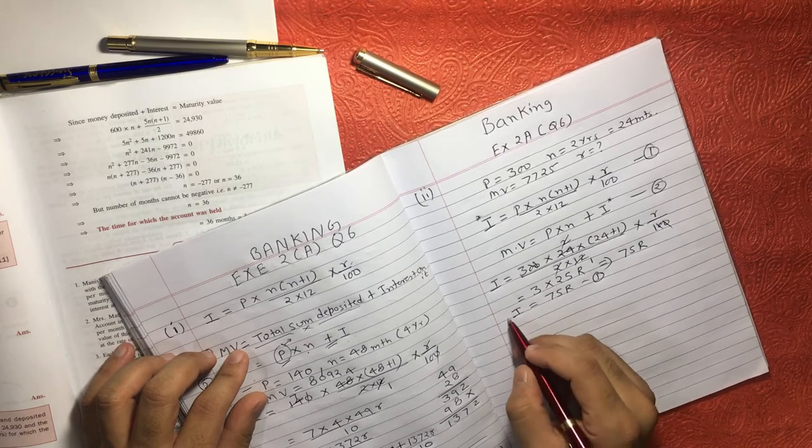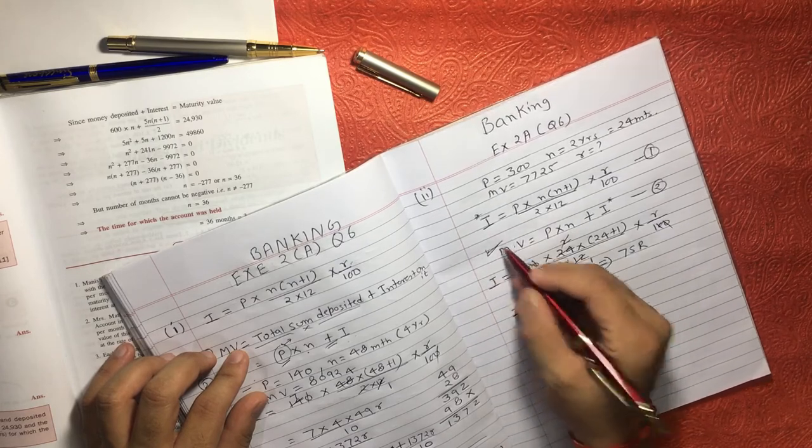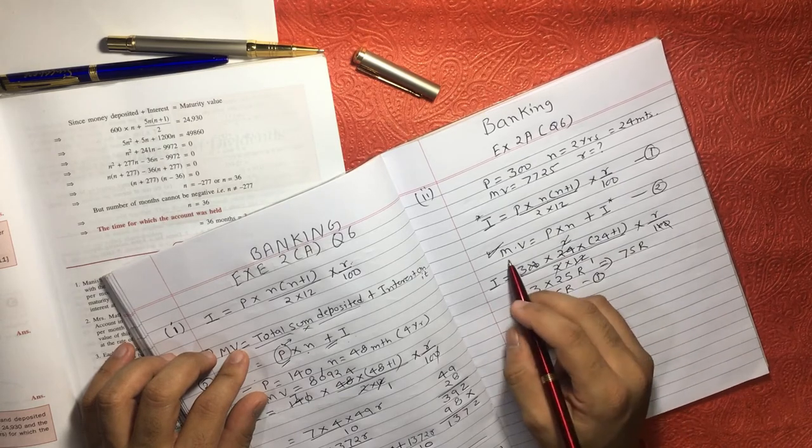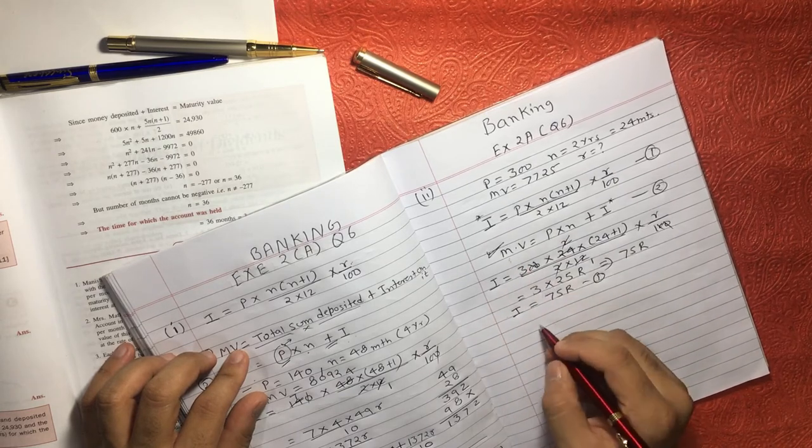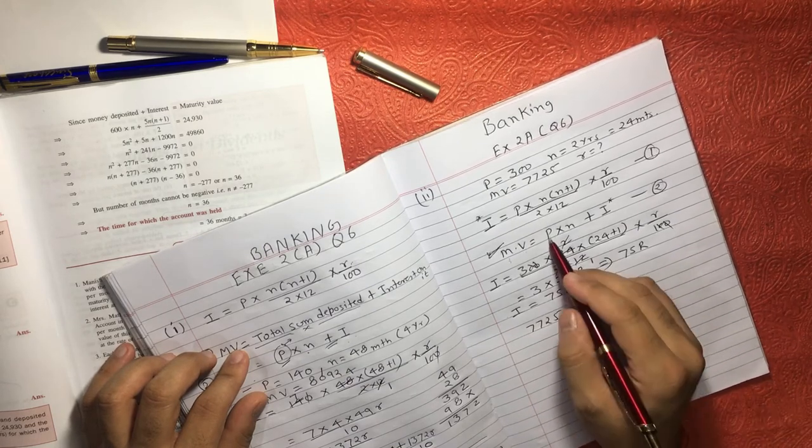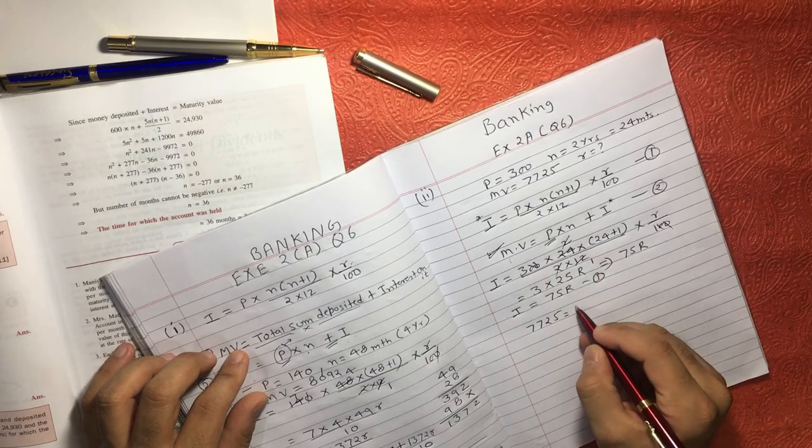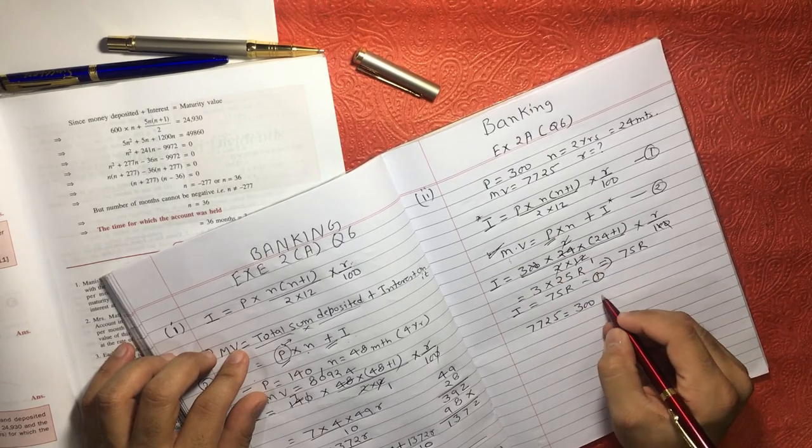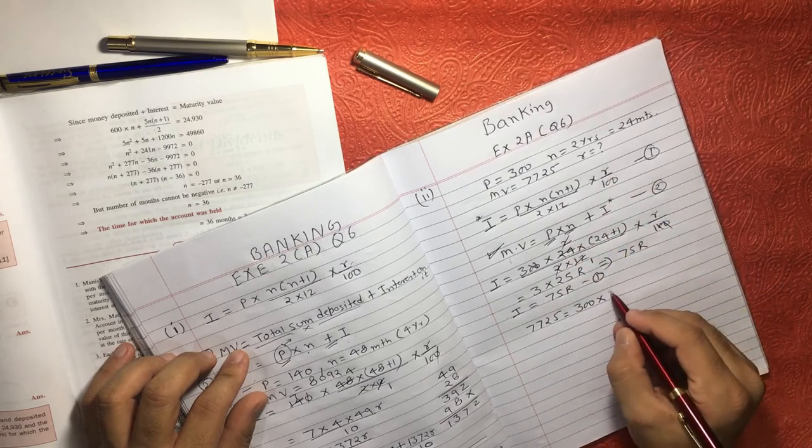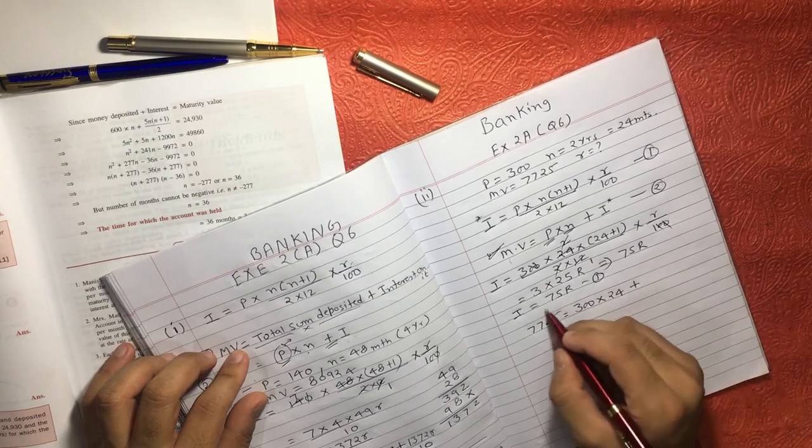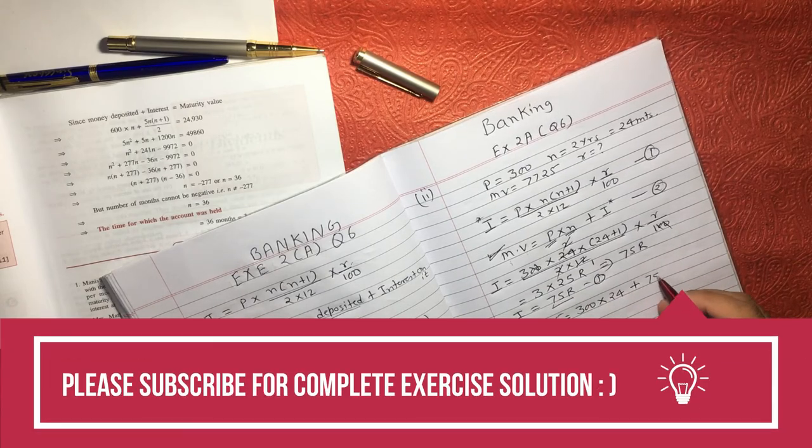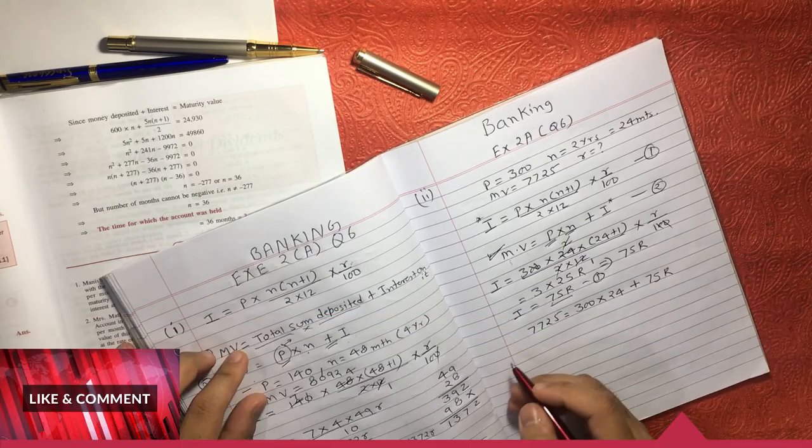Now if we put this value in our formula number 2, we can easily find the value of R because maturity value we already know. So that is 7725 is equal to what? P. P is what? 300. 300 into N. N is what? 24 months. 24 plus I. I is what? We already know from equation number 1, that is 75R.